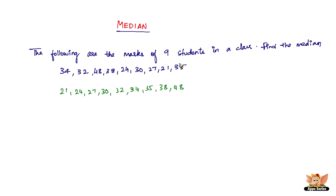You've arranged the entire thing in ascending order and then see the middle one. How many terms are there? One, two, three, four, five, six, seven, eight, nine. Since nine are there, you can see the middle one is 32. So the median of this distribution is 32.